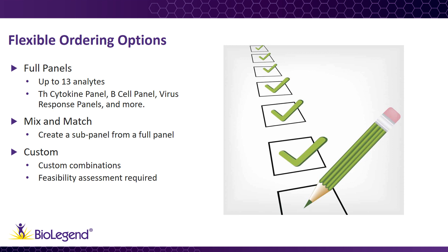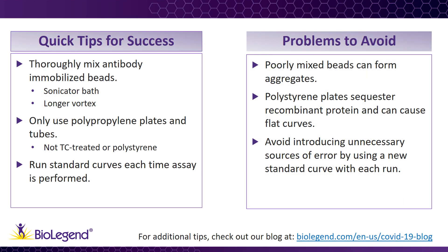Custom panels are available for researchers who would like to combine a set of targets from multiple full panels into one assay. Custom panels must be assessed for feasibility before ordering. Getting the best possible results with your LegendPlex assay requires attention to a few key points. When preparing the kit reagents, always make sure to thoroughly suspend the premixed antibody-bound beads to avoid clumping. This is achieved by placing the beads in a sonicator bath for one minute at room temperature. If the bath is not available, increase vortex time from 30 seconds to one minute. Be sure to only use polypropylene plastics, as polystyrene or tissue-culture-treated plates are known to bind recombinant proteins to the surface of the wells, causing flat standard curves at the low end and leading to errors in calculating sample concentrations.